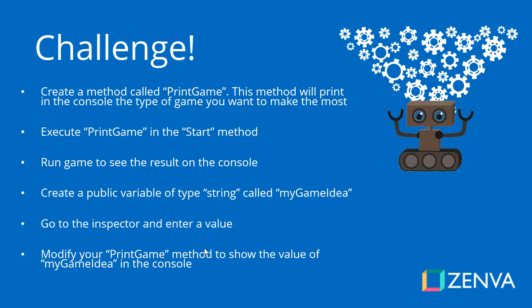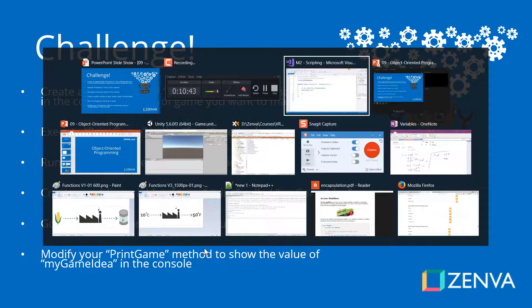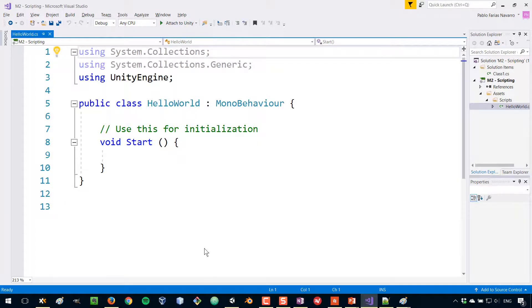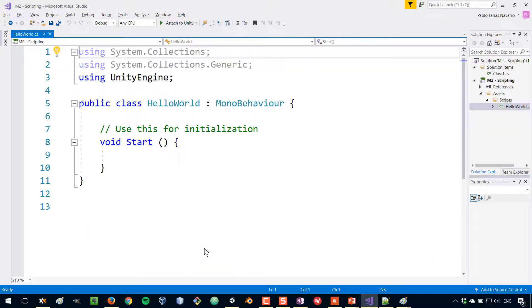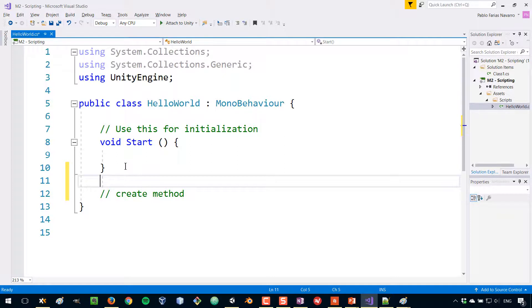Now it is challenge time — a two-stage challenge. First, go to your Hello World script and make sure it only has the Start method. Create a new method called printGame, and all it's going to do is print in the console the type of game you want to make most. For example, if your dream game is a VR RPG, just print that. Then execute that method in Start, run the game, and confirm you can see the output in the console.